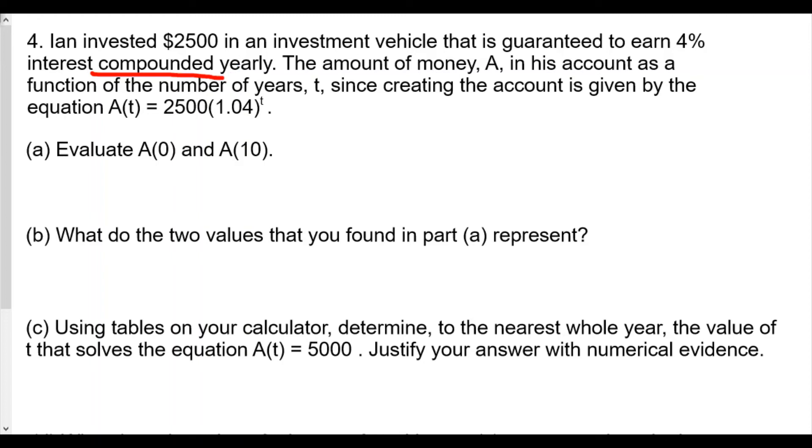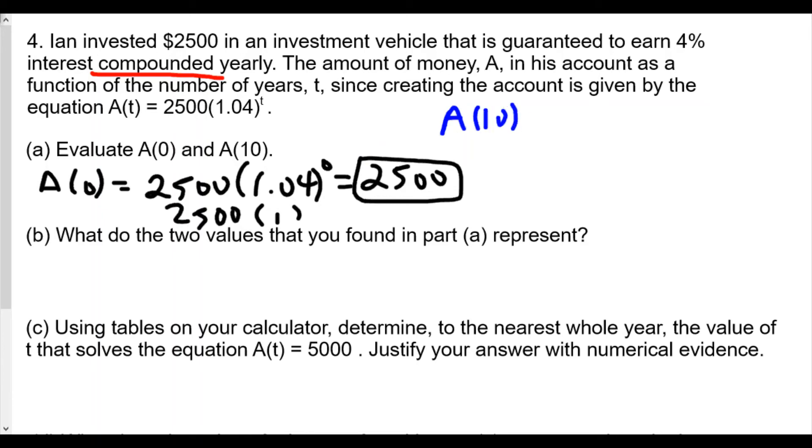The amount of money A in this account as a function number of years T, since creating the account, is given by the equation A of T equals 2,500 times 1.04 raised to the T power. So we're going to first find A of 0. So A of 0 is equal to 2,500 times 1.04 to the 0 power. Now, any number to the 0 power we know is equal to 1. Multiplying this, you get 2,500.